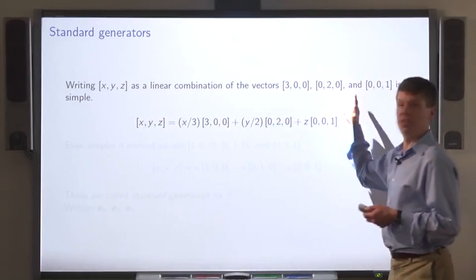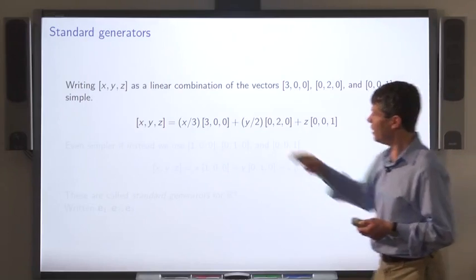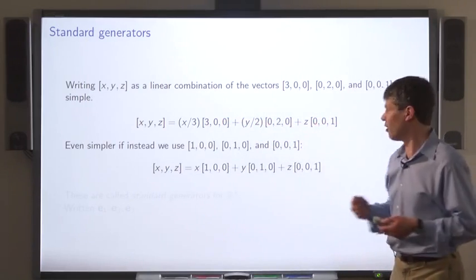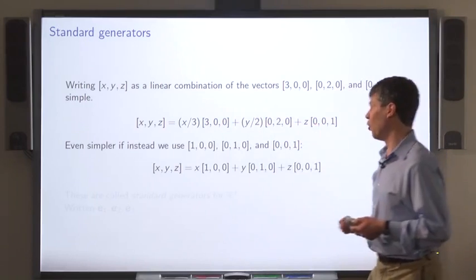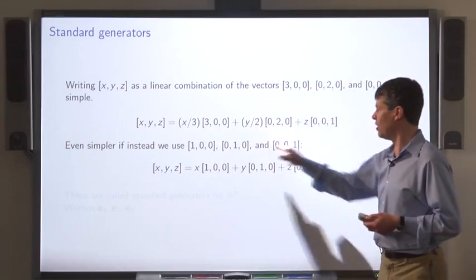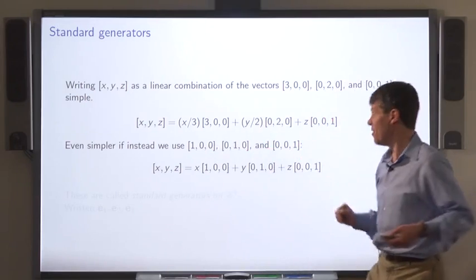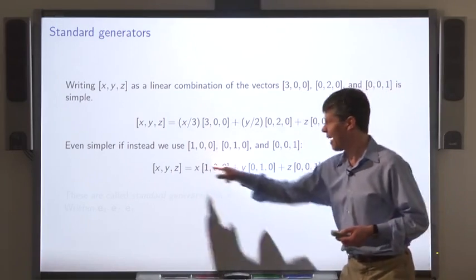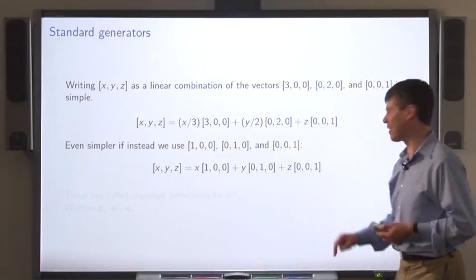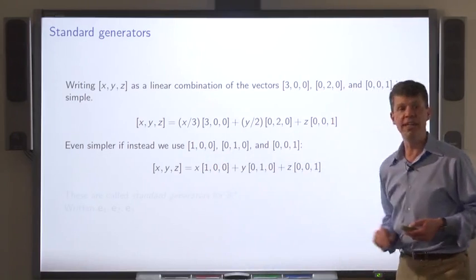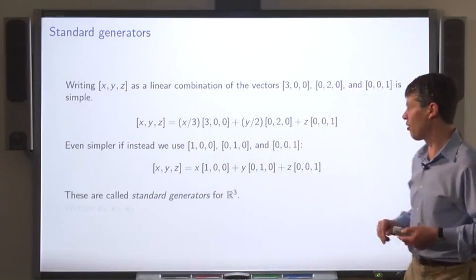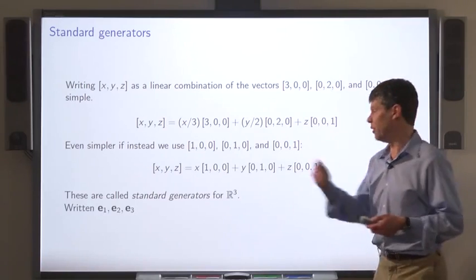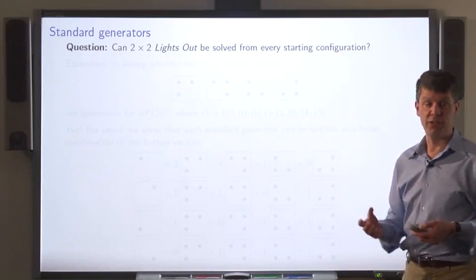Writing the vector (x, y, z) as a linear combination of these vectors was easy because they have a special form. It's even easier if we use the standard vectors (1, 0, 0), (0, 1, 0), and (0, 0, 1), because then the linear combination is simply x times the first vector plus y times the second plus z times the third. We call these standard generators for R3, traditionally written E1, E2, and E3.